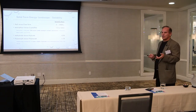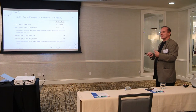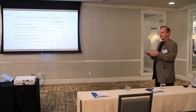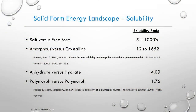Early studies were typically done drug in capsule or with a very simple formulation. Later studies are done in the final formulation. So you don't want to have to develop that final formulation, which costs a lot of money and time. It's good to get your polymorph identified and defined very early.